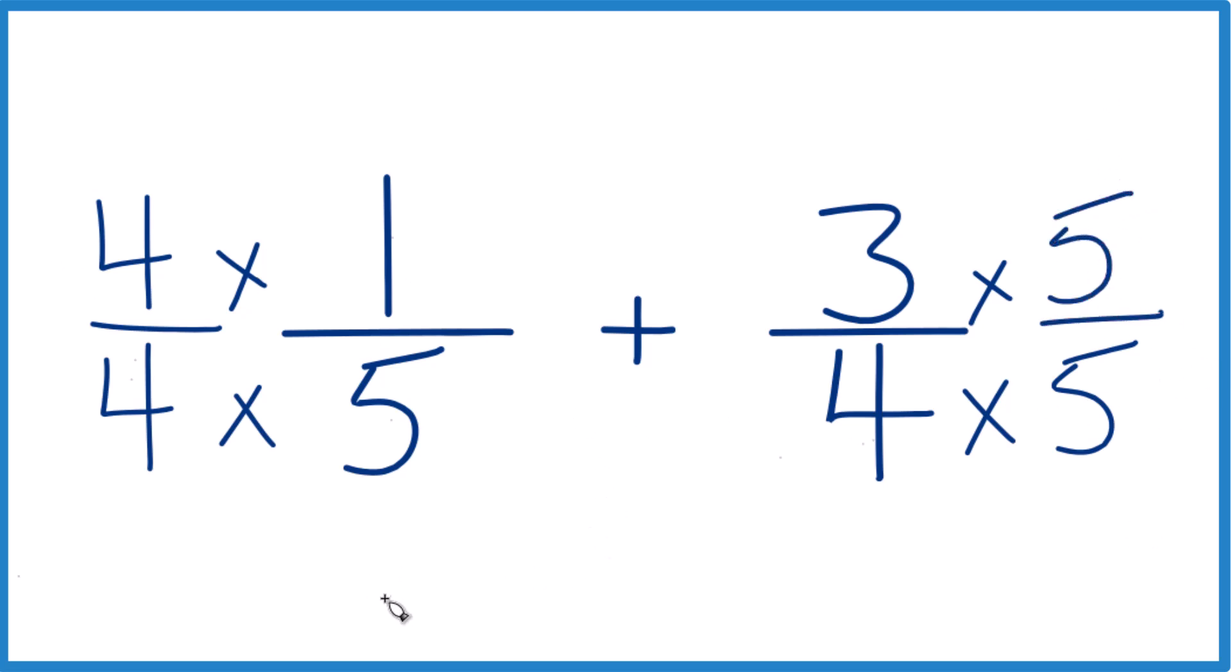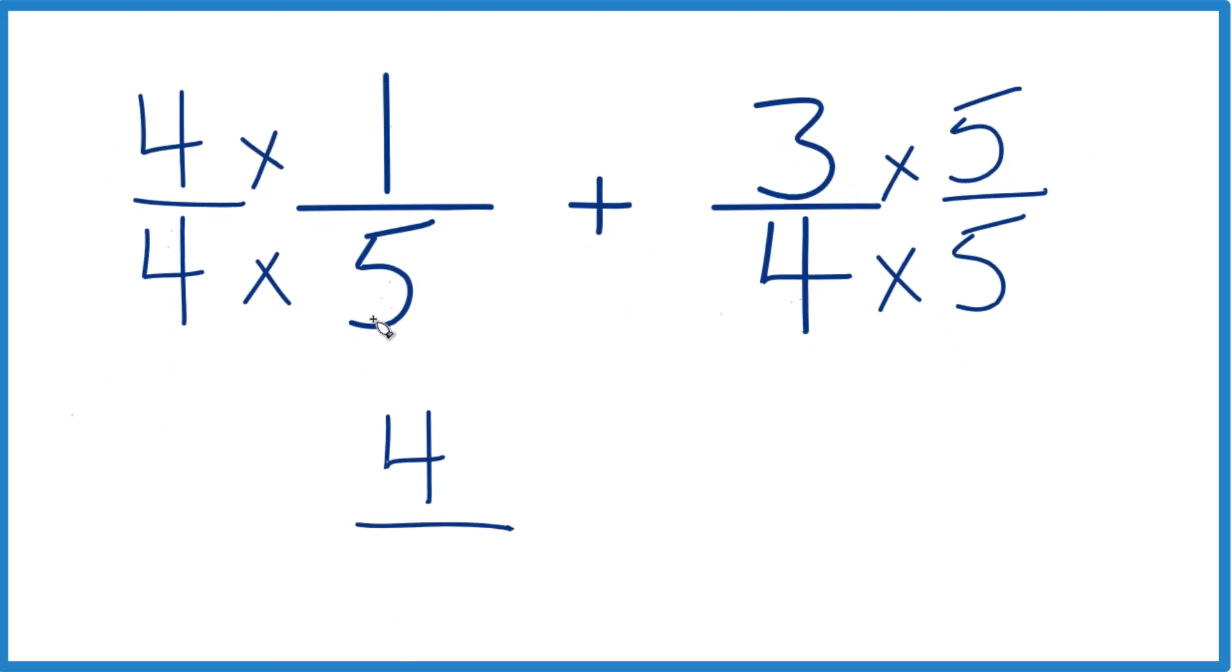Now, 4 times 1 is 4. 4 times 5 is 20. And 4/20, that's the same thing as 1/5, 1 fifth. They both equal 0.2.